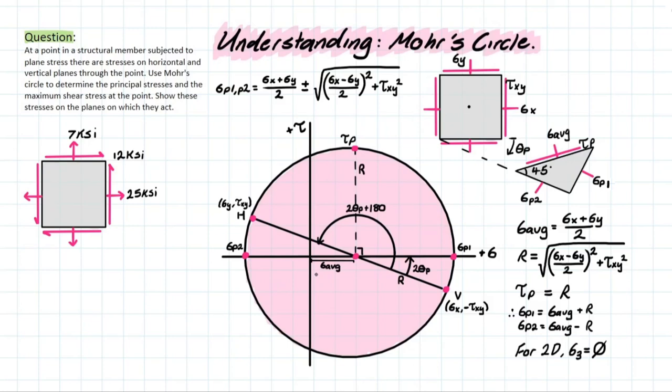So what is Mohr's circle in the first place? Mohr's circle is pretty much just a graphic method to determine stresses of an element derived from our previously understood transformation equations. This method allows us to skip over the complex nature of the formulas and see it more intuitively through an image, with all of the different lines and angles relating to each other.